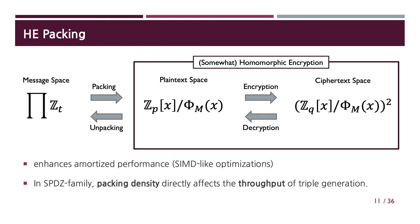In this section, we are interested in HE packing methods. By packing, we mean methods for embedding several copies of messages into a single plaintext while providing a certain degree of homomorphism. In our work, we consider packing for copies of ring of integers modulo 2^t. Packing enhances amortized performance by allowing SIMD-like optimizations. It is essential for practical use of HE, as the complicated plaintext space defined by lattice-based HE schemes is usually not the space we want to compute in. Packing plays an important role in SPDZ-like HE-based MPC protocols, since the efficiency of packing methods—measured by how densely the messages are packed into a plaintext—directly affects the throughput of triple generation.